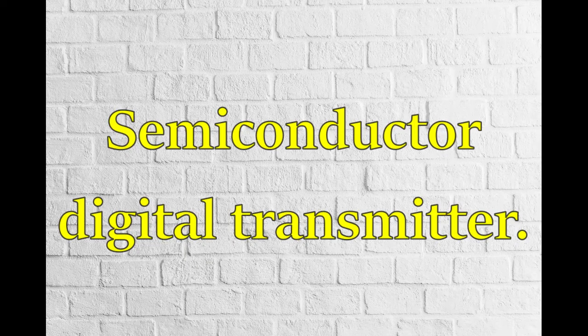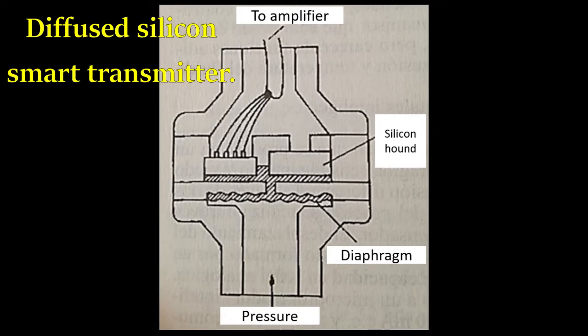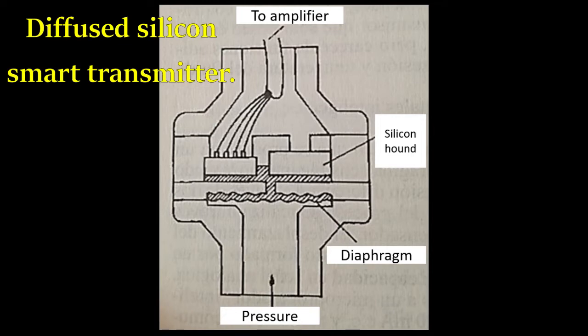The second model is based on semiconductors: when subjected to pressure, they produce an electric current, which is used in this transmitter model. For example, in the diffused silicon smart transmitter, a diffused semiconductor made with a thin silicon layer doped with certain techniques is used to generate a stress-sensitive zone.